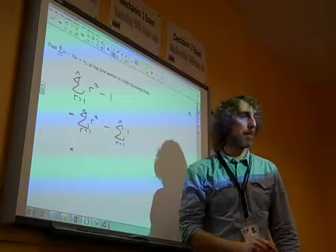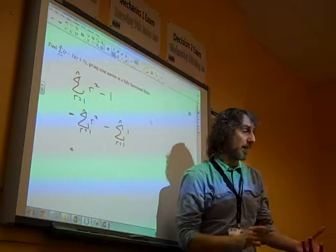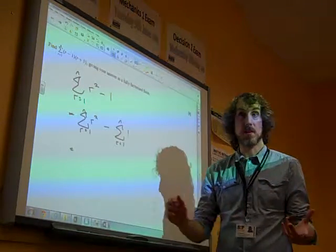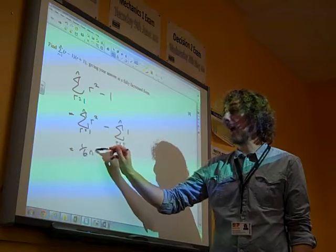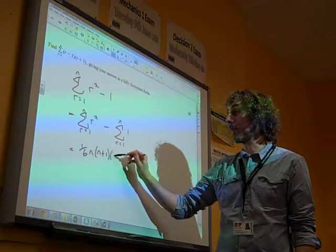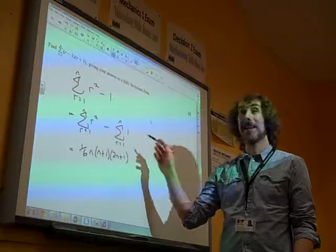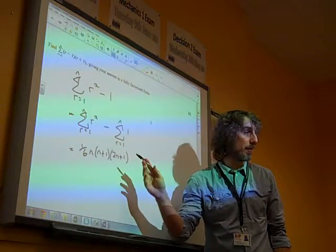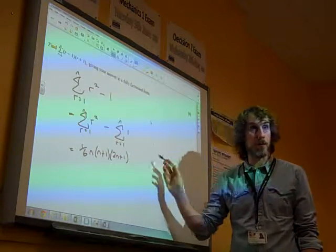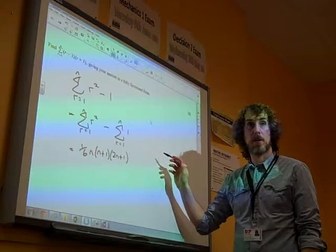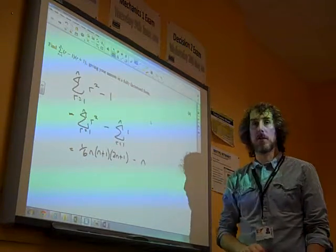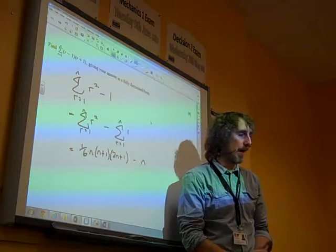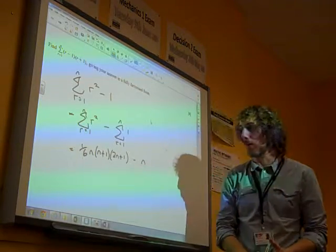And here we get the first mistake that people make. The sum of the r squareds is one that we know. That's the 1 sixth n, n plus 1, 2n plus 1, that one's OK. This one is the one that we make a mistake with, because if you add up a lot of ones, if you do it n times, you get n, don't you? So we need to have to take away n at the end of that. Quite a few people had to take away 1.